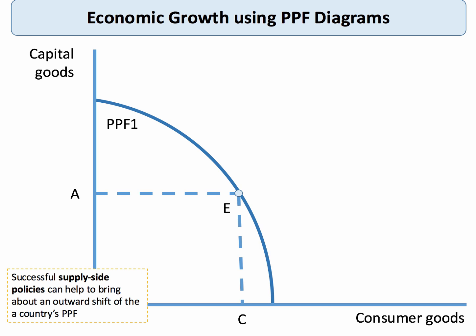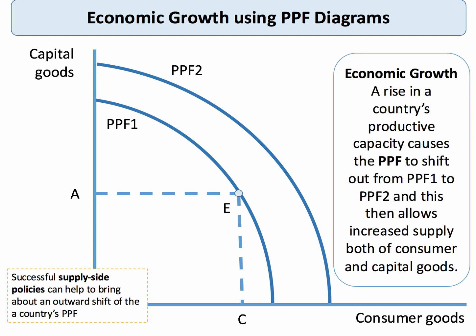We can show economic growth using a PPF. If you have successful, effective supply-side policies, that can help to bring about an outward shift of the PPF. There's our initial one, PPF1. Successful supply-side policies and economic reforms can bring about an outward shift of the production possibility frontier, and that allows a country to increase their supply of both consumer and capital goods. That would be a neat way of showing long-term growth using a PPF diagram.